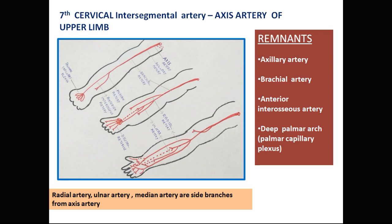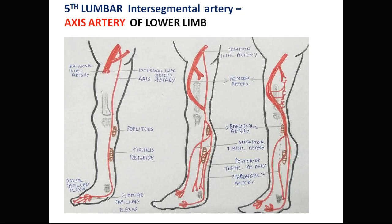The radial artery, ulnar artery, and median artery are side branches from the axis artery.